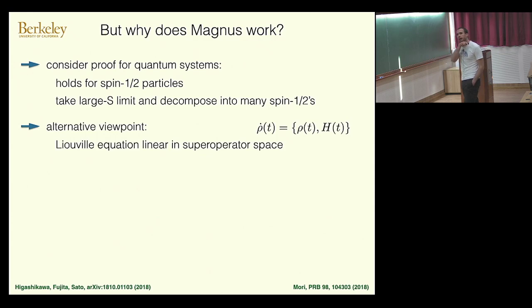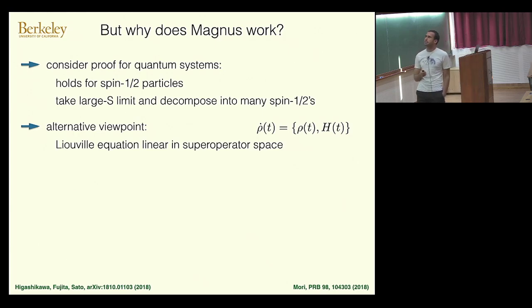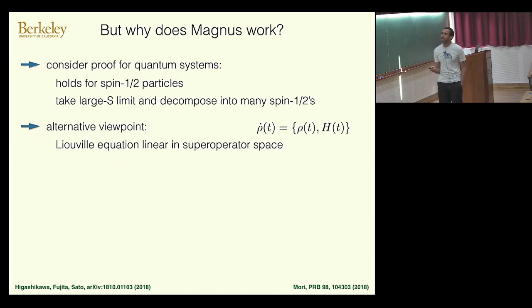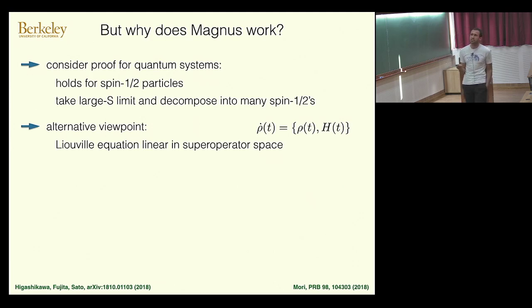Here is an alternative viewpoint. The Hamilton's equations of motion are nonlinear, but the more appropriate comparison to quantum mechanics is to look at the Liouville equation for the phase-space density. The Liouville equation is linear in super-operator space. Defining a Liouvillian operator gives a linear time-periodic operator, so one can apply Floquet's theorem. The Magnus expansion written for the Liouville equation then transfers one-to-one to a Magnus expansion for the Hamiltonian, justifying what I showed.